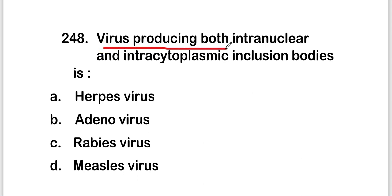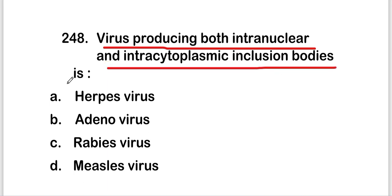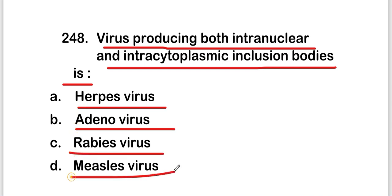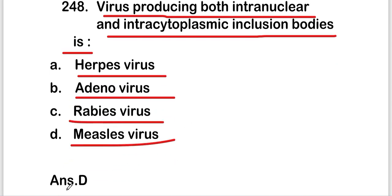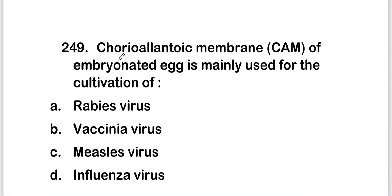The next question: the virus producing both intranuclear and intracytoplasmic inclusion bodies is herpes virus, adenovirus, rabies virus, or measles virus? The right answer is option D — measles virus. The virus producing both intranuclear and intracytoplasmic inclusion bodies is measles virus.